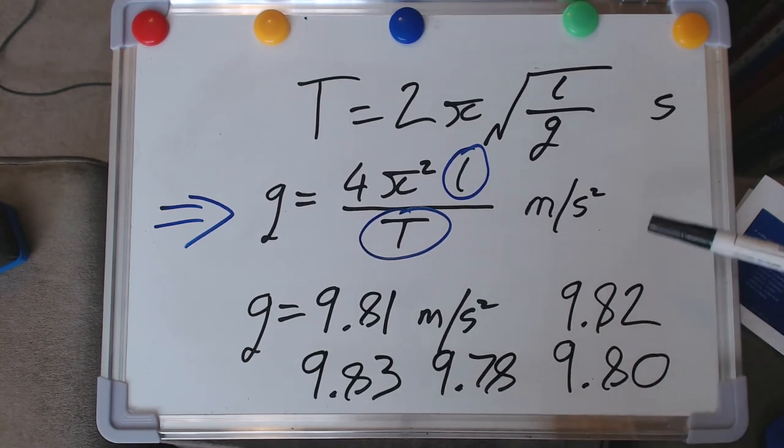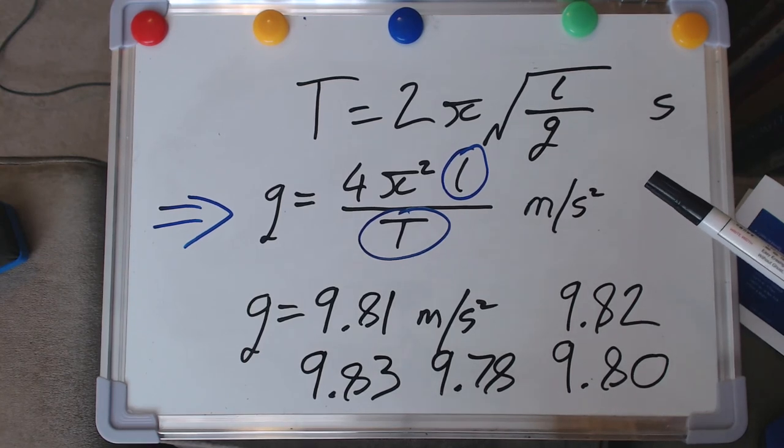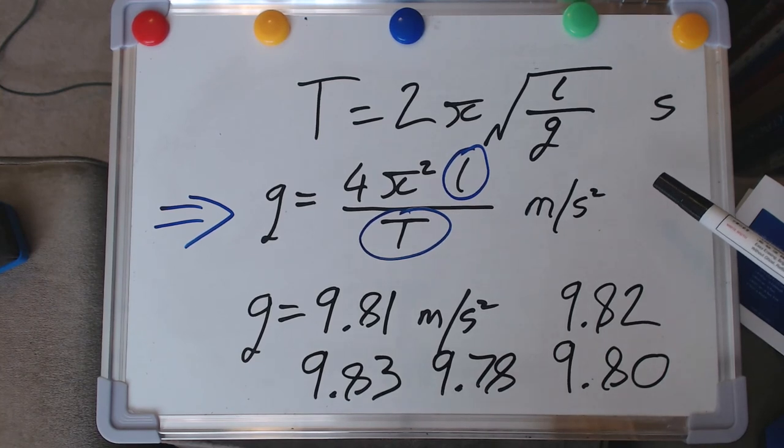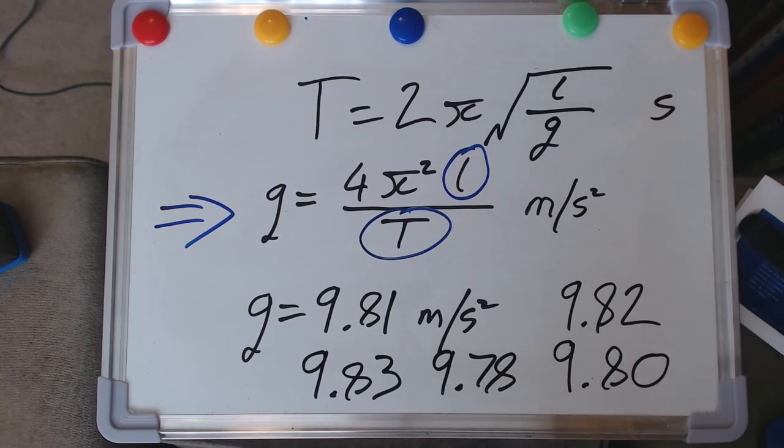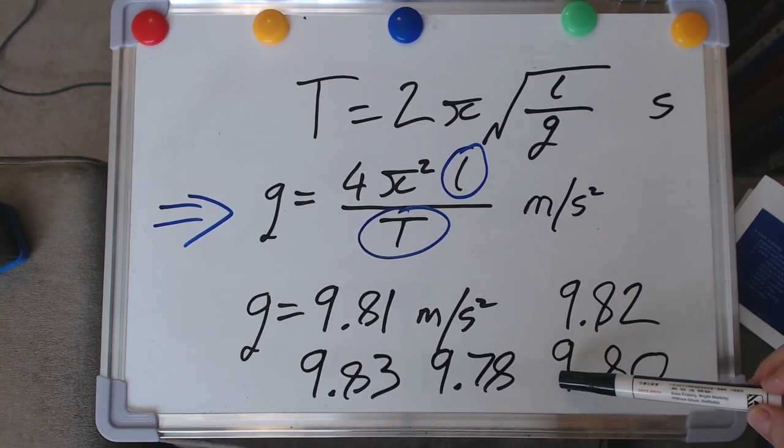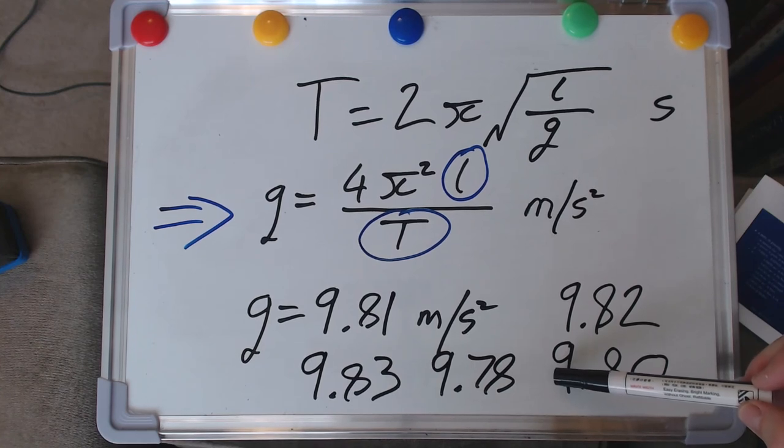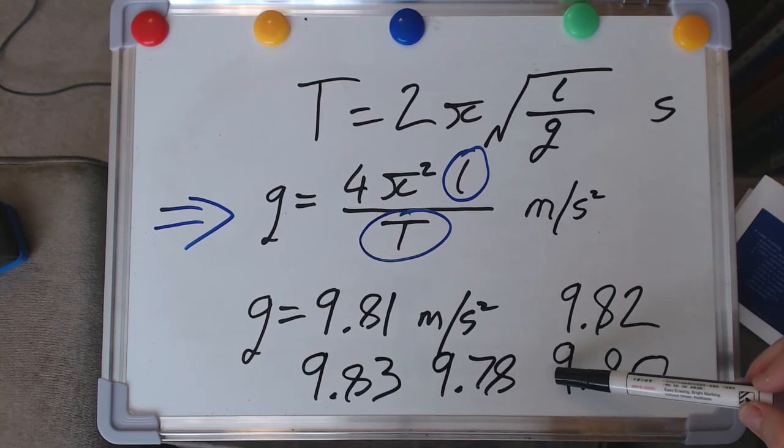So our simple pendulum has its mathematical explanation taken from something moving around in a circle. But with it, we can actually do some very interesting measurements of the variation of Earth's gravitational attraction at different points across its surface.